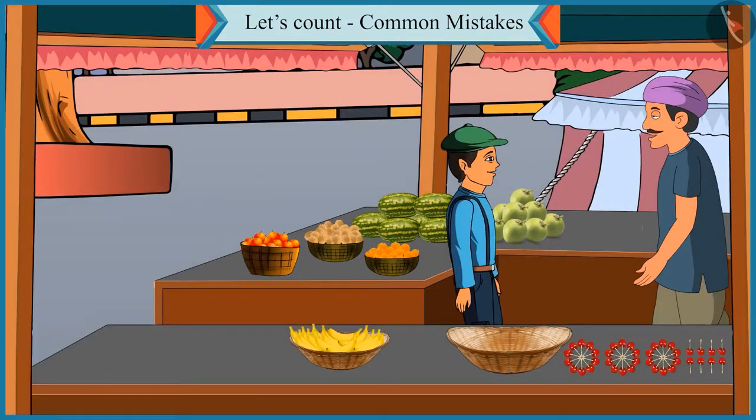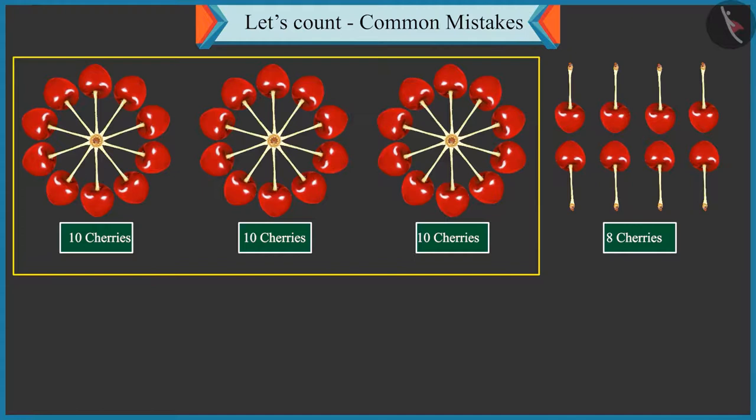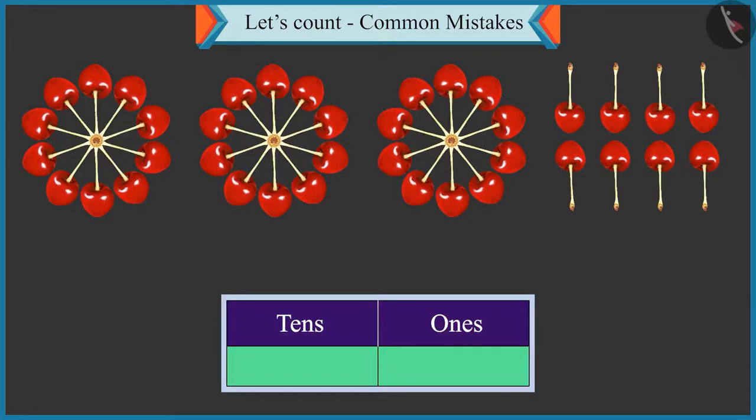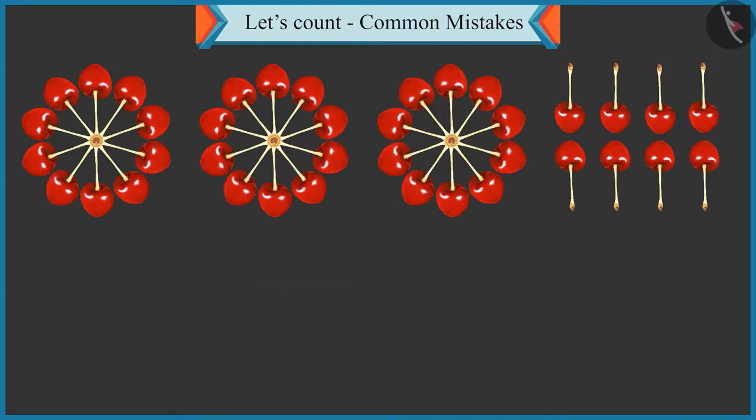Now tell me, how will you write three groups of tens and eight single cherries in the form of tens and ones? Hmm, eight in the box of tens and three in the box of ones.